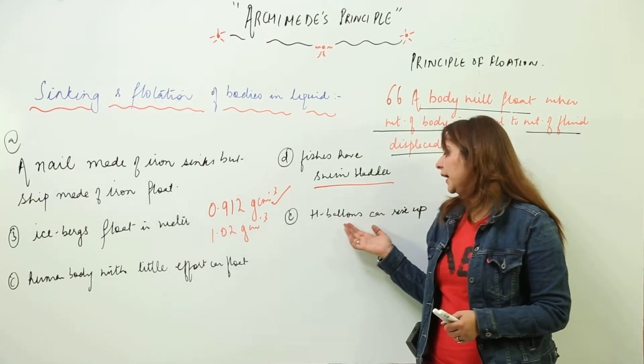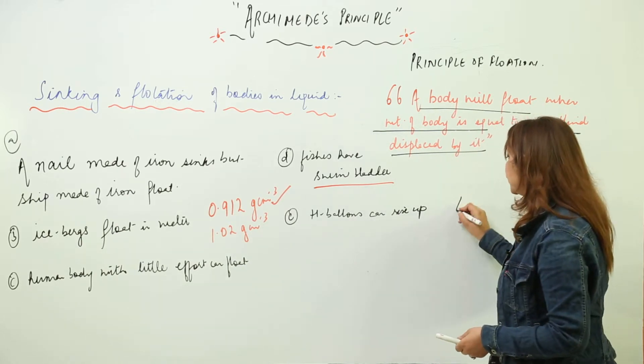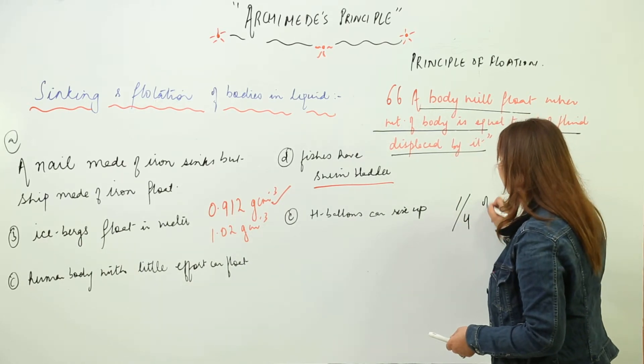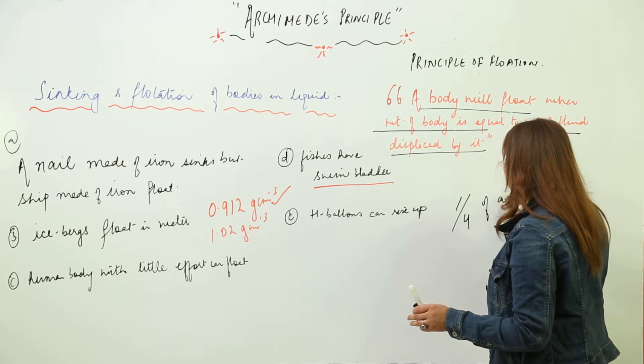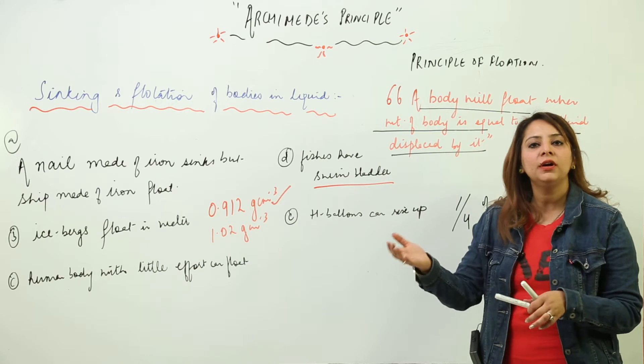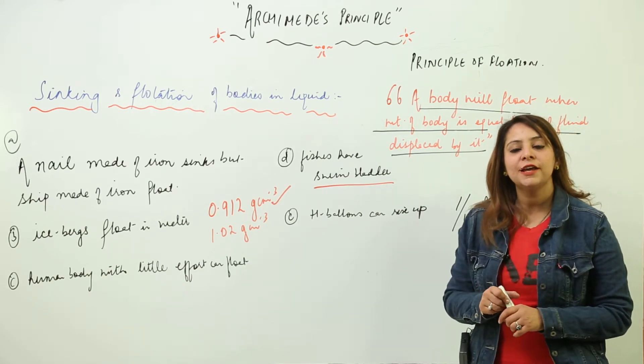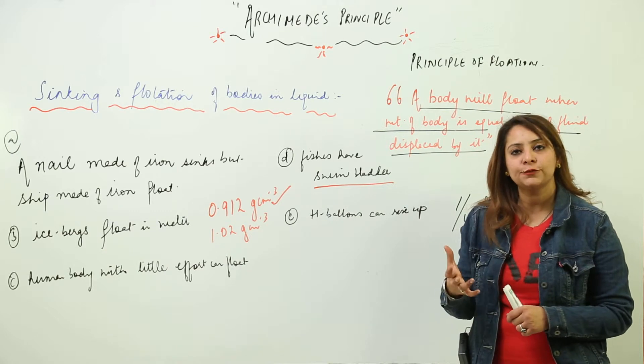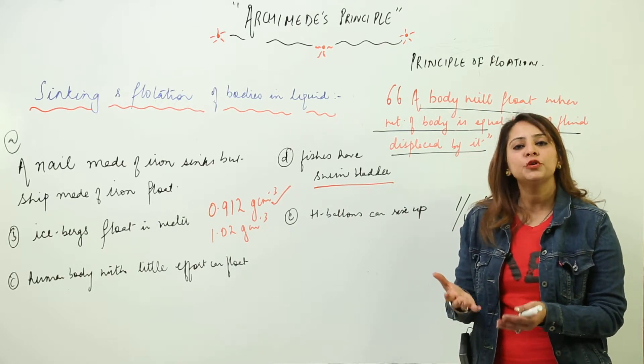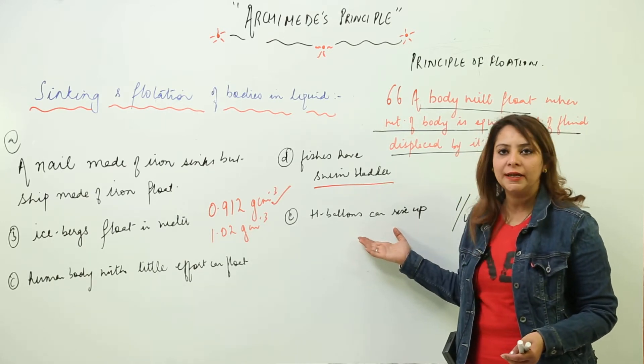We know that hydrogen balloons can rise up because hydrogen has density which is approximately one-fourth or less than air. Air has four times more density than hydrogen. Because the hydrogen density is less, the upward force from the air below is more, which pushes the hydrogen balloon up. That is the reason hydrogen balloons can rise up.